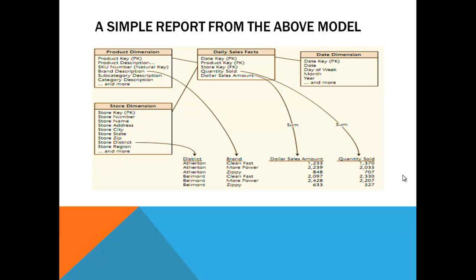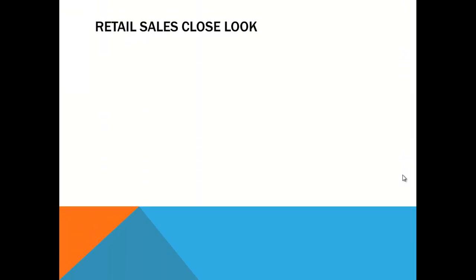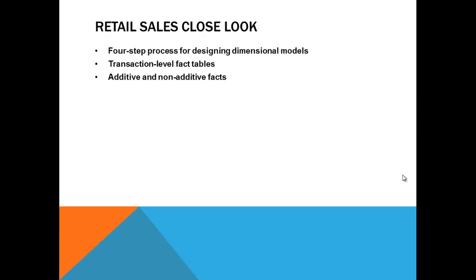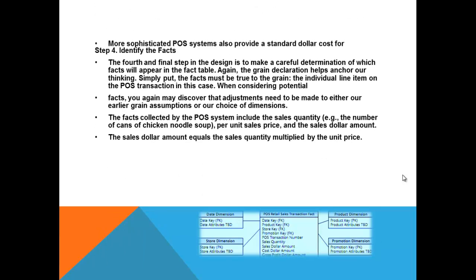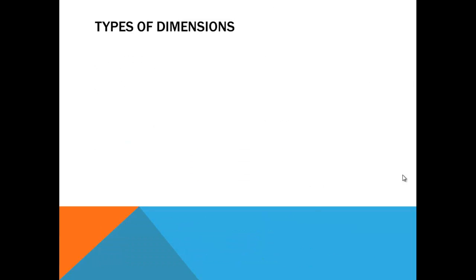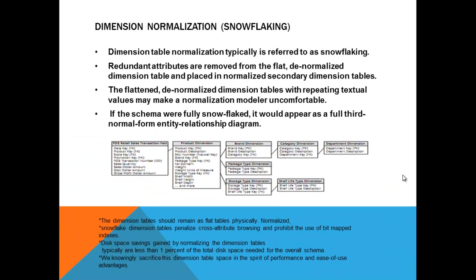This is the actual snowflake schema — dimensions are normalized. If you look at the product dimension, earlier I had only one product, but now I have separated it. I have a brand dimension separately. So if you have a new brand entry, you will not touch everything — you'll only make an entry in the brand dimension. You won't touch the package, storage, category, department, or shelf life type dimensions.